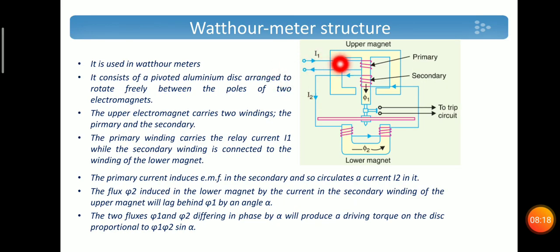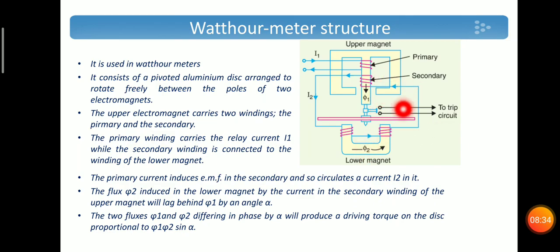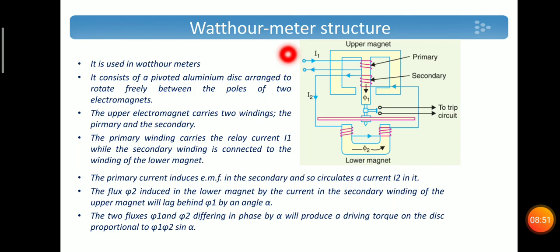The next type is the watt-hour meter structure, used in watt-hour meters. It consists of a pivoted aluminum disc arranged to rotate freely between the poles of two electromagnets. The upper magnet carries two windings — the primary and secondary. The primary winding carries the relay current I1, while the secondary winding is connected to the lower magnet. I1 is the current in the apparatus to be protected, and due to that current, a current I2 is induced in the secondary winding, which also flows through the lower electromagnet.